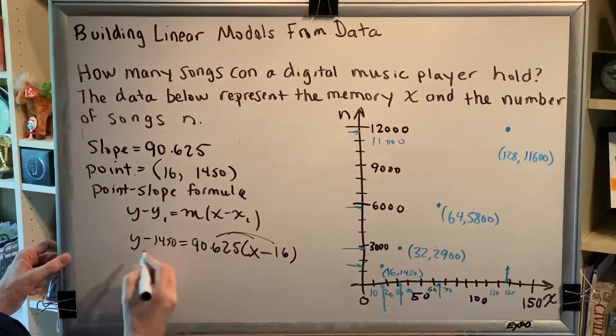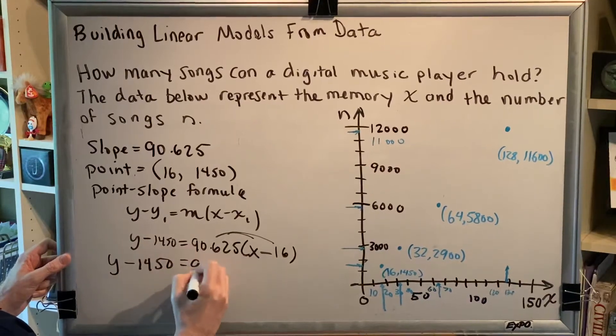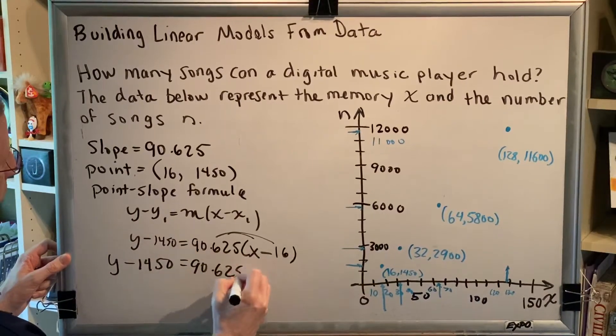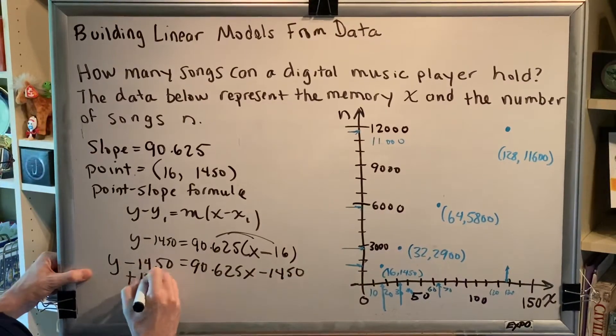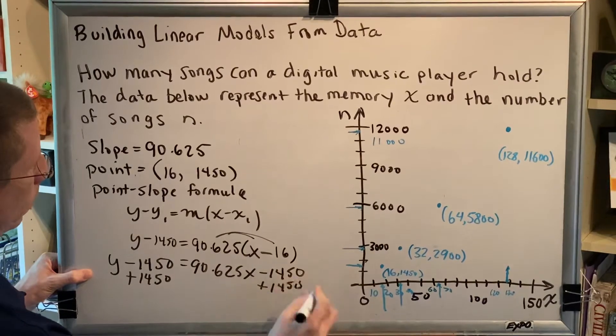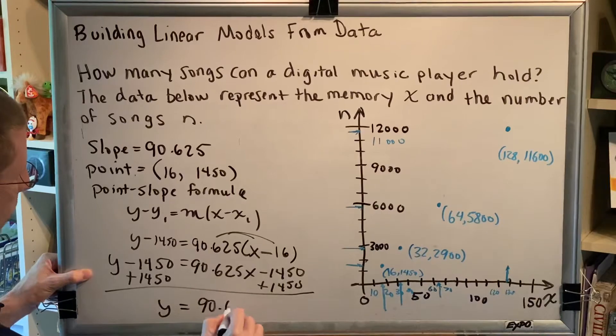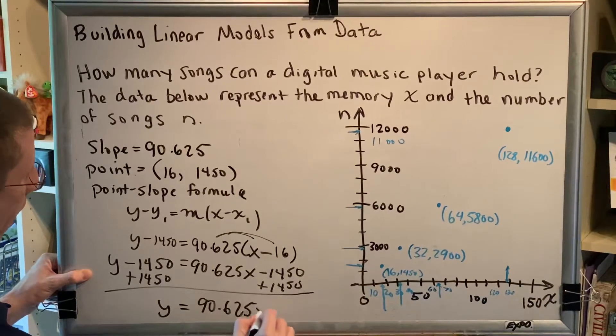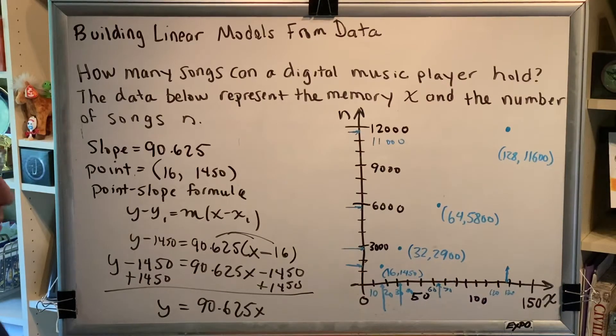Now we're going to distribute this here. So we get y minus 1450 equals 90.625x minus 1450. And we add 1450 on both sides. And we get the final result, y equals 90.625x. Now there's only one tiny change that I would want to make to this equation before I call this my final answer.